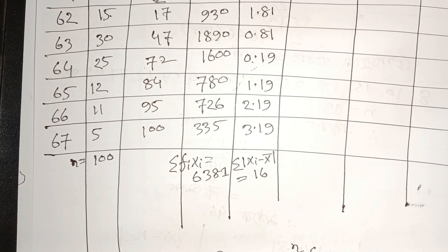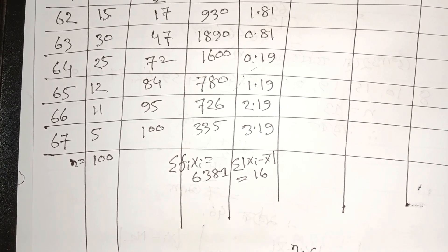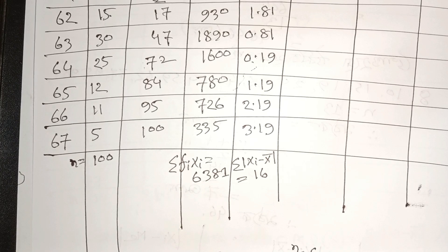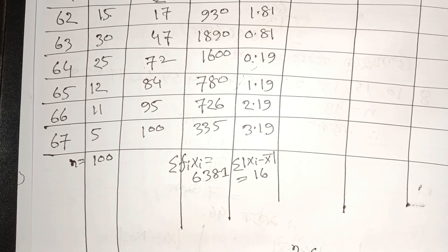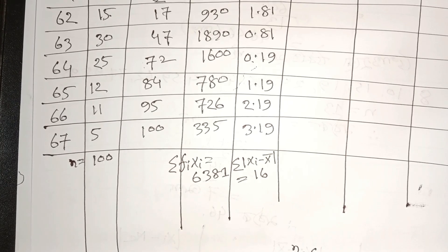We will have to do this. We will have to do this. This is the ability. So we will have to check this. We will check this: 3.81, 2.81, 1.81, 2.81, 2.1, and 2.